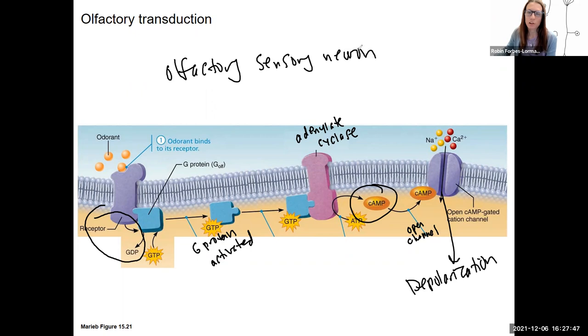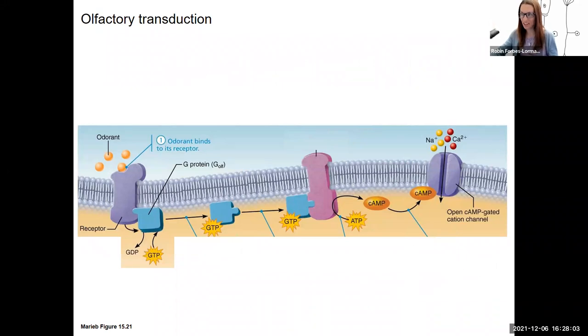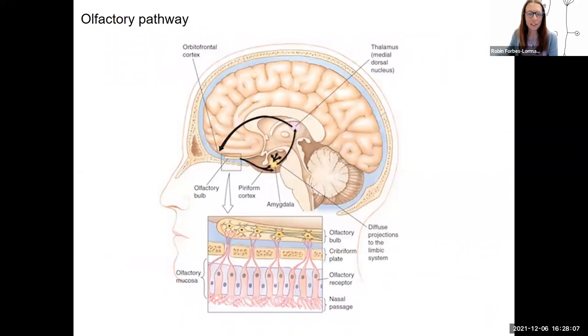This neuron is going to release glutamate to signal the mitral cell. This mitral cell is going to project to the brain. The axons of the mitral cells are the olfactory tract, olfactory nerve here. So here is olfactory bulb. This becomes olfactory nerve. This is the direction of those pathways.